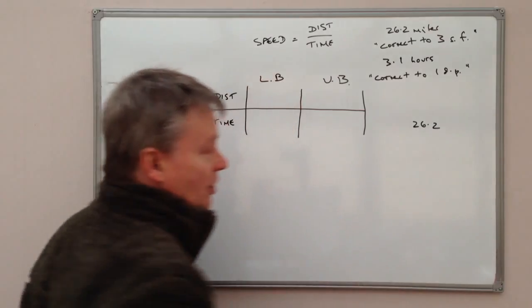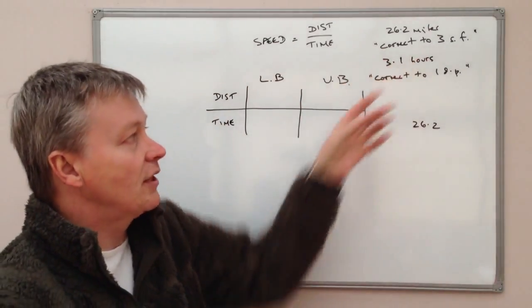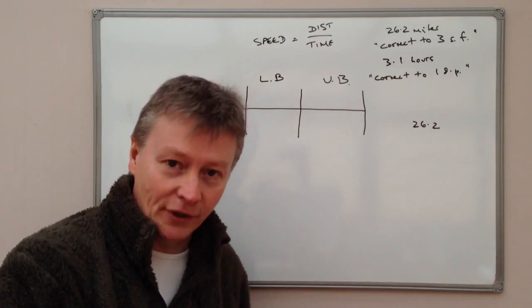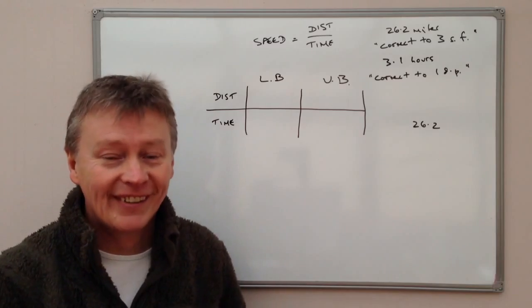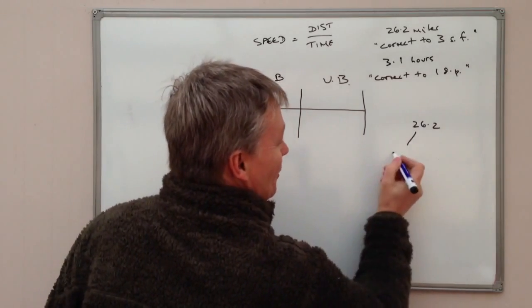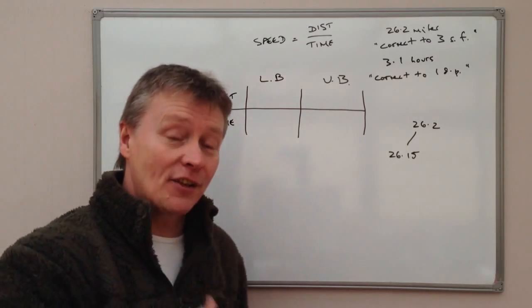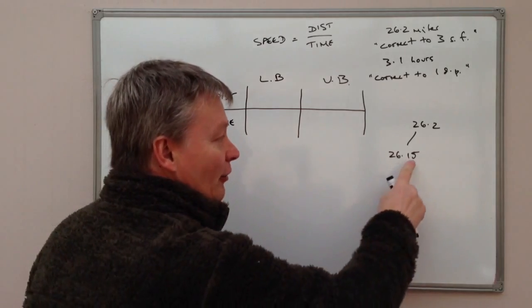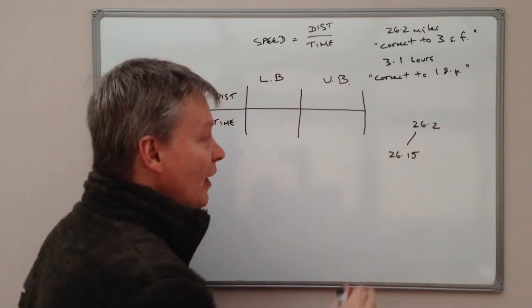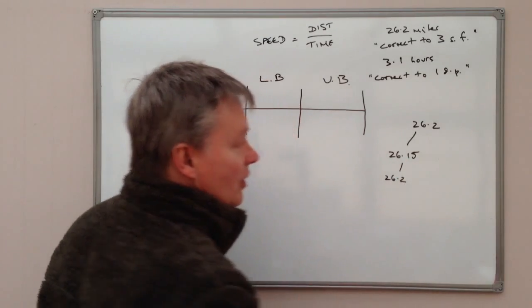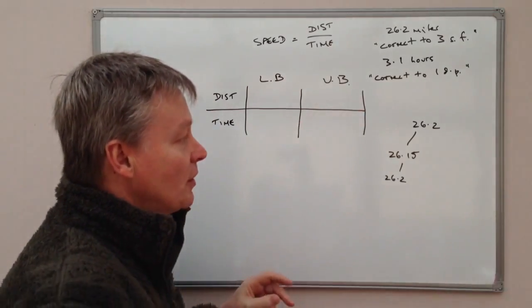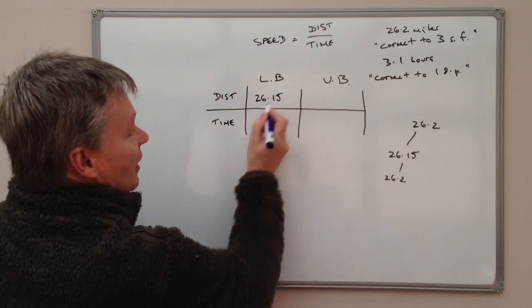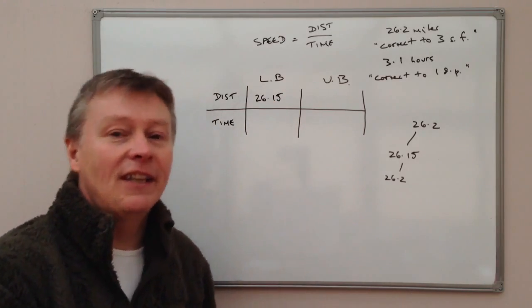So let's have a look firstly at the distance value. Now the distance value is 26.2. If you look at those numbers, the bit that we're interested in is this is correct to three significant figures. So in other words, what numbers when we correct them to three significant figures will make 26.2. What I mean by that is that 26.2 is actually 26.15 correct to three significant figures, because the first three figures are 2, 6, and 1. And I look at the fourth figure and because it's 5 or above, it means I round that up to 26.2. So in other words, the least possible value of 26.2 must be 26.15.